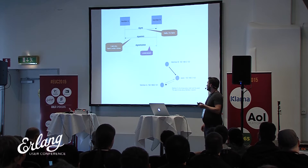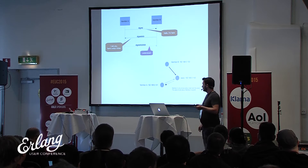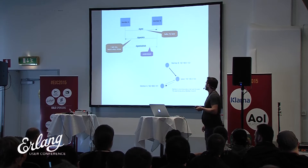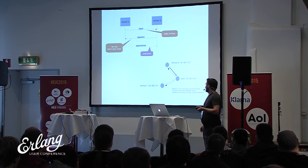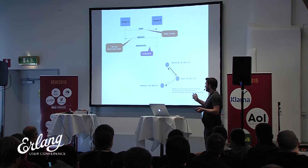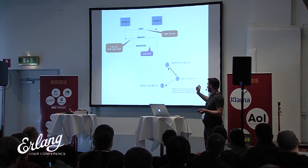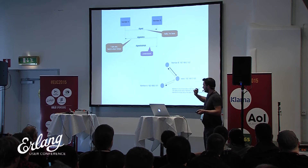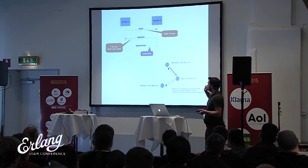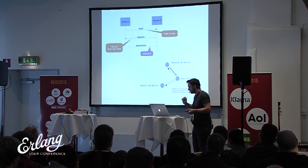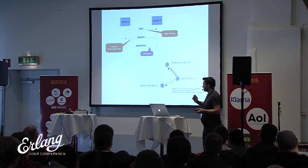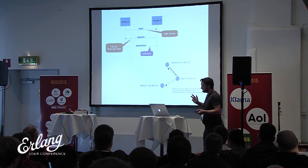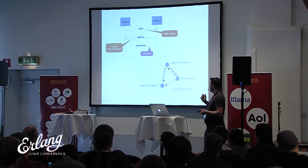When member B joins, it goes to the seed — it's not yet aware of member A. It receives a digest ack from the seed containing three entries, because the seed already knows about member A, itself, and now member B. Upon the next gossip round, member A also sends a digest to the seed and receives the list of three members — member A, the seed, and member B — so all of them can now communicate directly with each other.